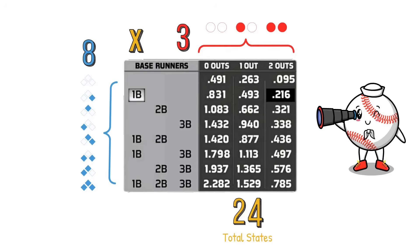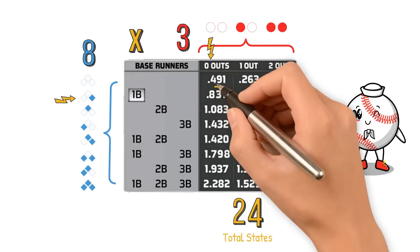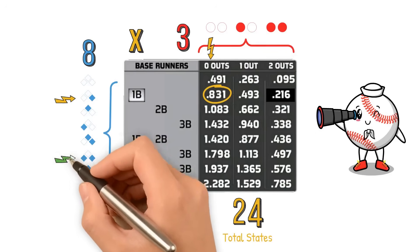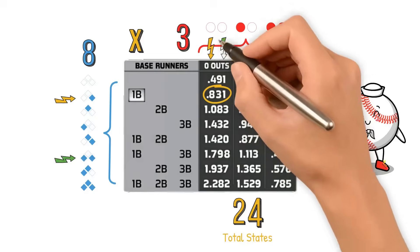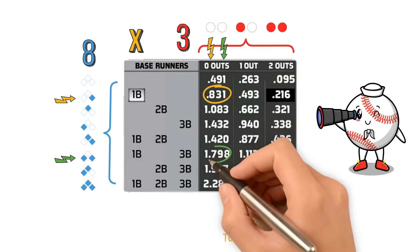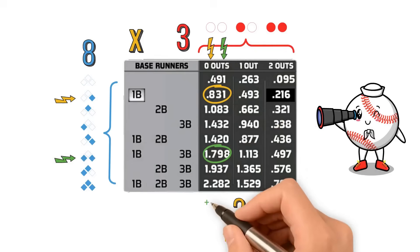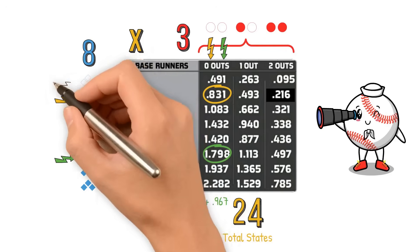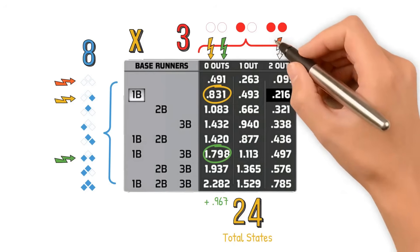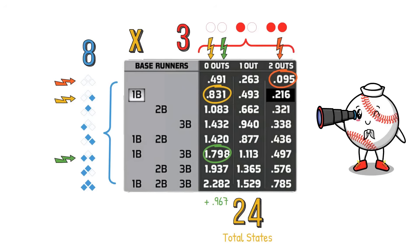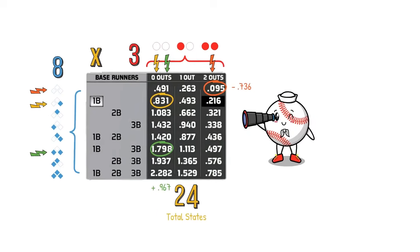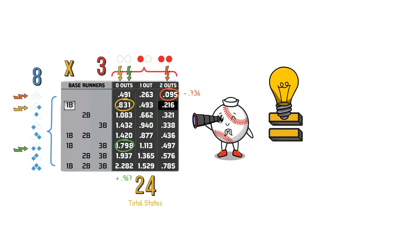You can see on the chart the different run values for each situation. For example, a runner on first with no outs has 0.831 expected runs. If a player hits a single and moves that runner to third base, making the new base-out state first and third with no outs, our run expectancy shoots up to 1.798 — an increase of 0.967, which is almost one full run. However, if that same batter grounds into a double play from that original situation, the base-out state is now no one on with two outs, which is 0.095 on our RE24 chart — a decrease of negative 0.736 runs.